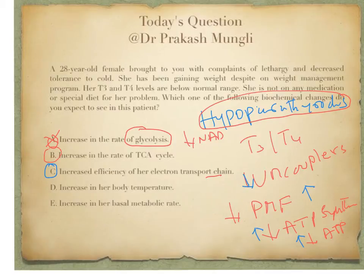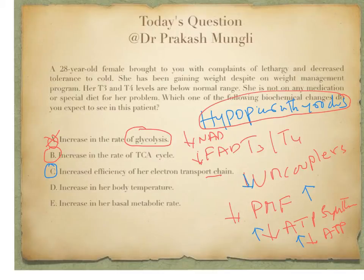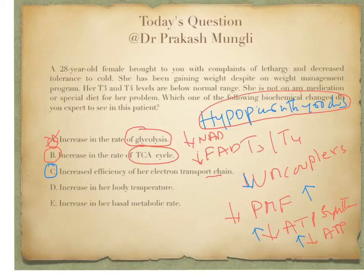Option B says increase in rate of the TCA cycle. The same concept applies here. When the electron transport chain is running at a saturated state, there will be plenty of NADH and less NAD+, and also less FAD. The TCA cycle requires plenty of NAD+ and FAD to be reduced to NADH and FADH2. With decreased availability of FAD and NAD+, the TCA cycle will also slow down. So option B is wrong.